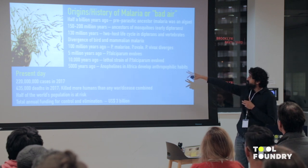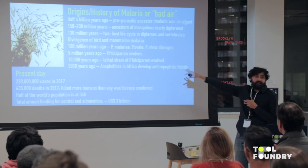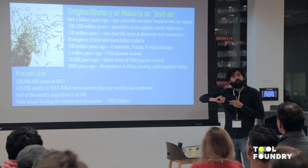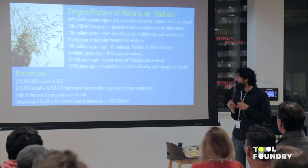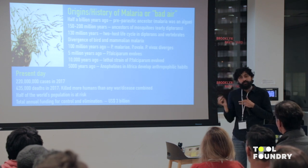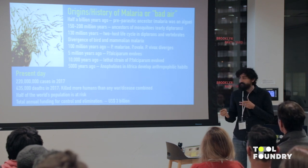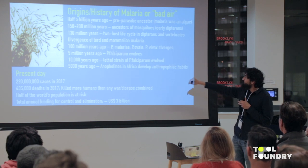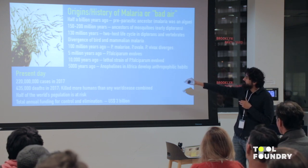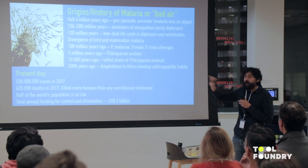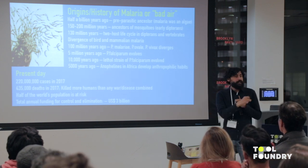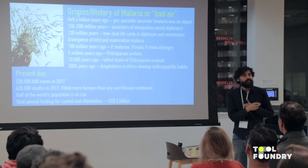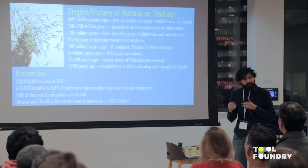Going back to five million years ago: falciparum evolved — the deadliest malaria parasite out there. A week of having it with no treatment is a death sentence. Around 10,000 years ago a lethal strain evolved, and around 5,000 years ago anophilines — the mosquitoes that transmit malaria — decided that humans are their preferred host, which is again a really terrible thing.